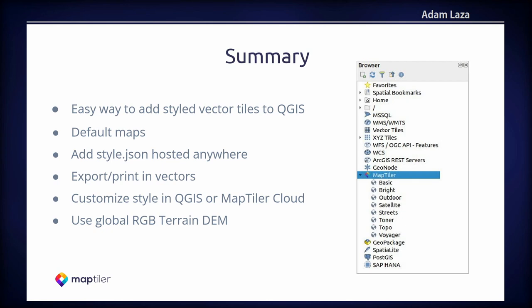So that's pretty much it. As I said, it's easy to add vector tiles into your QGIS projects. You can have some default maps from MapTiler Cloud, but you can also add your own style.json. It's great for printing. Please be aware that it's for non-commercial use only — if you want to use it for commercial use, please make sure you have a good subscription. And you can also customize the styles and use the RGB terrain for your projects. Thank you.